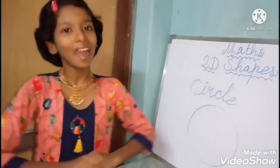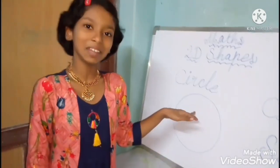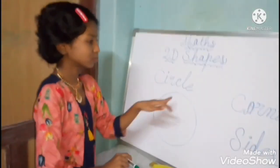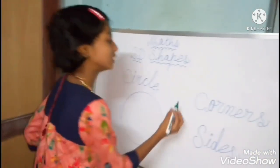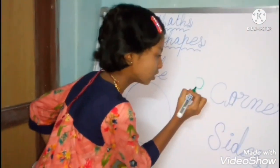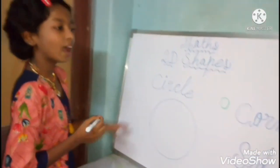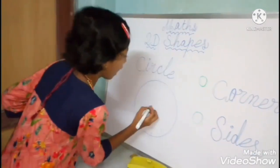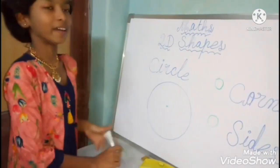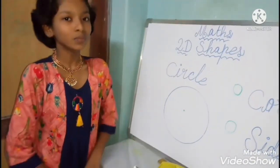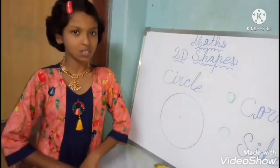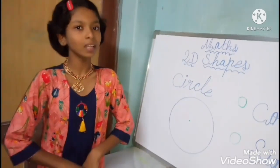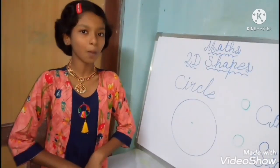Now I have drawn here one shape. This shape name is circle. Circle has no corners, so there are zero corners. And there are no sides also. But it has one center point. So we have to know that circle has zero corners and zero sides, but has one center point.